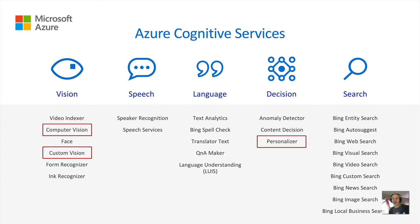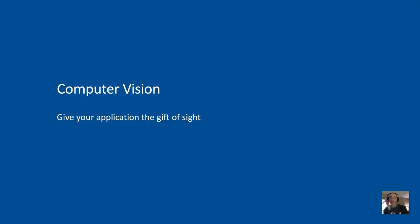The principles of setting up and using cognitive services are the same for all the APIs, so what you learn here today applies to any of the AI services you want to use. We're only going to be talking about computer vision, custom vision, and personalizer, but the things I show you apply broadly. First, let's look at pre-built AI computer vision.